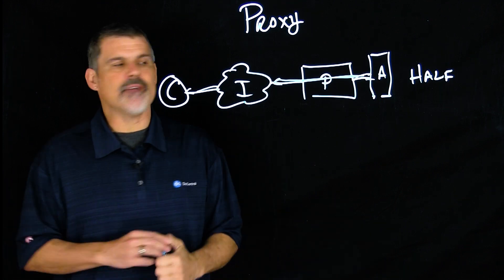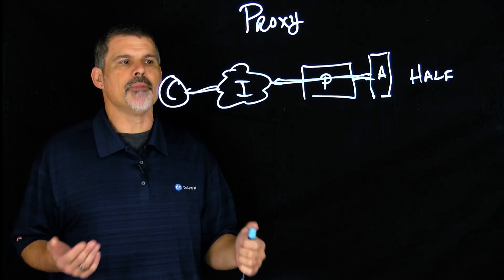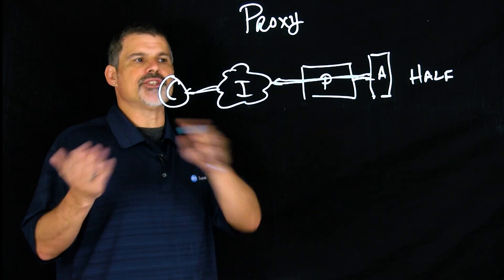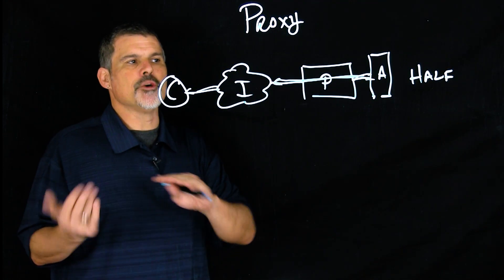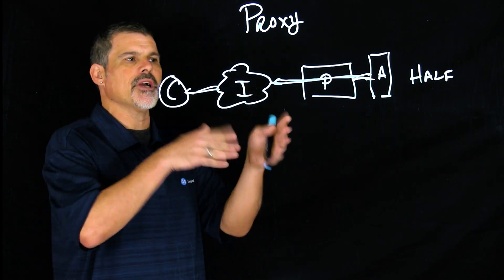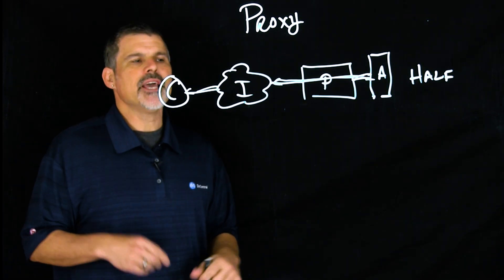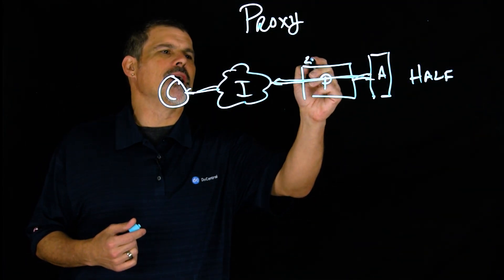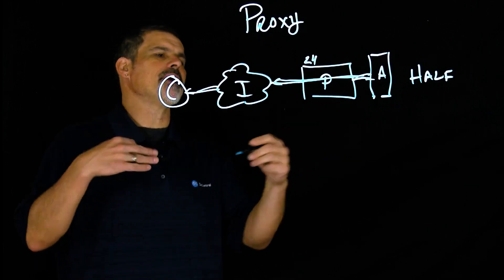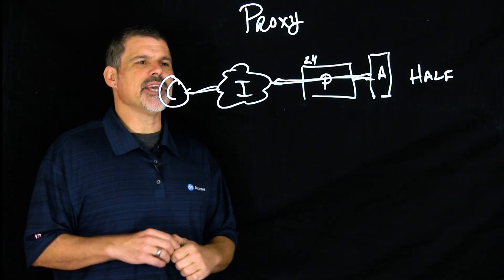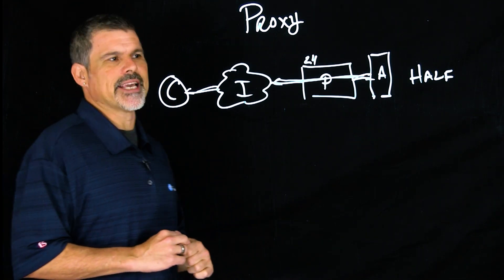Now after that initial call setup, the proxy really isn't doing anything after that. It's just allowing the traffic to pass through it back and forth between the client and the applications on the back end. It may be doing some layer 4 port mapping, maybe some routing, maybe some natting, but it's really not doing anything intelligent.